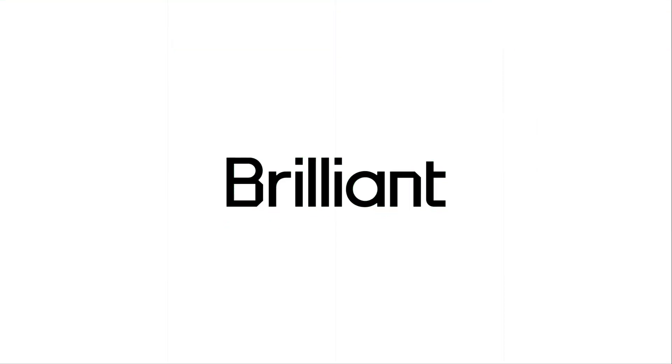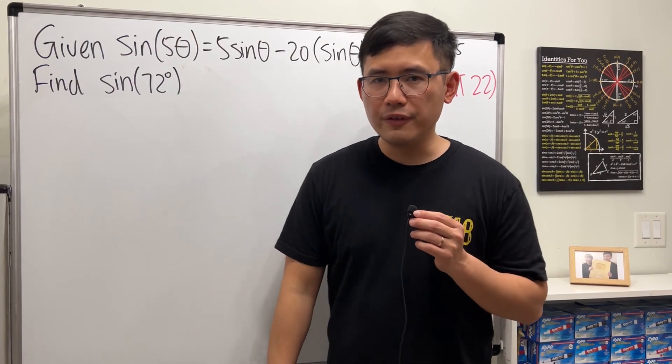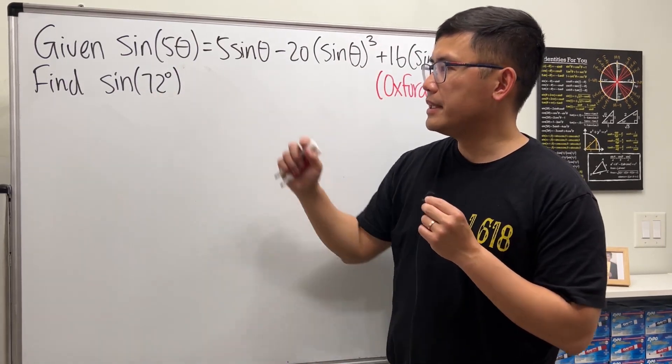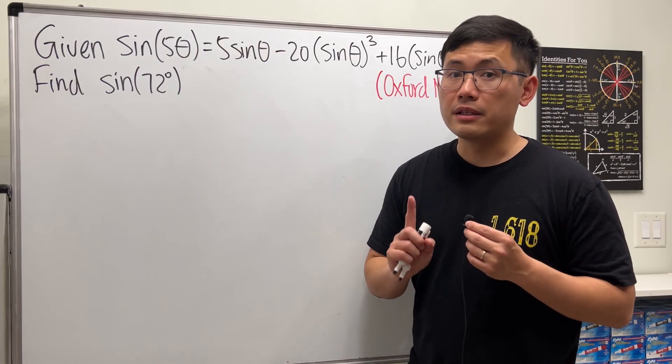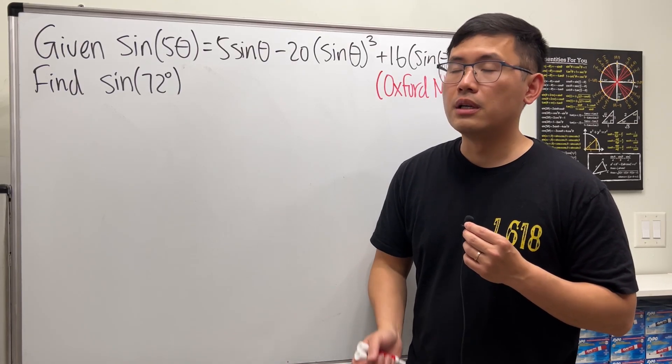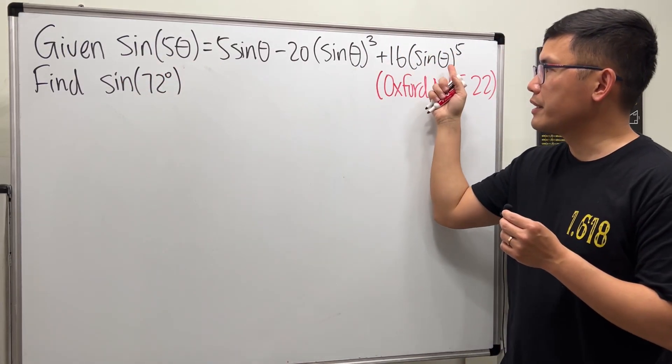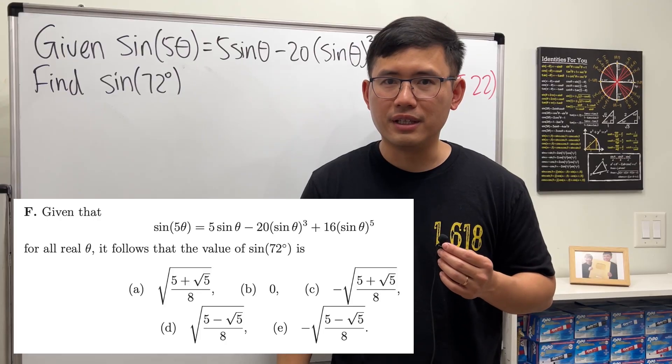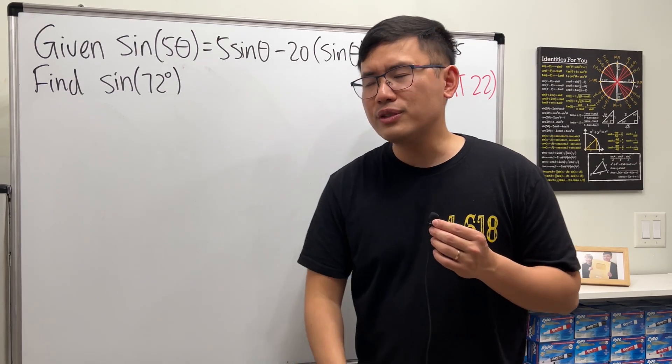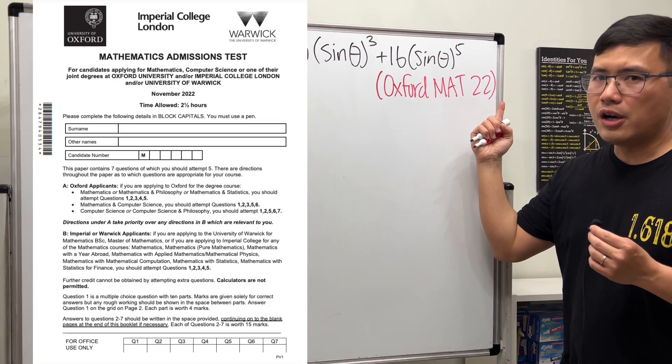Thanks to Brilliant for sponsoring this video. Classic trick value question today: we are going to figure out the value for sine of 72 degrees. There are different ways to do this, but today we have to follow the direction the question gives us—that sine of 5θ equals this right here. We have five options to choose from, and this question is from the Oxford University Math Admission Test in the year 2022.